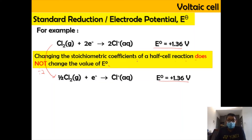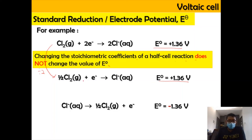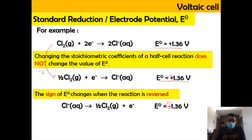However, if we reverse the reaction — moving the products to the reactant side and the reactants to the product side — the sign of E⁰ changes. So changing from reduction to oxidation reverses the sign of E⁰.